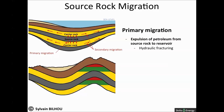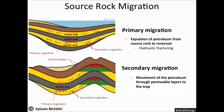Once primary migration has occurred, the migration of oil and gas from the source rock to the trap relies on a carrier system. This step is called secondary migration. It requires geological features with high permeability, allowing sufficient capacity for fluid flow. This drain system includes porous and pervious rocks, fractured rocks, or faults.